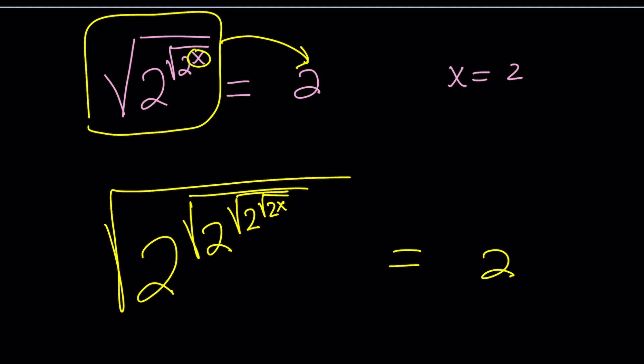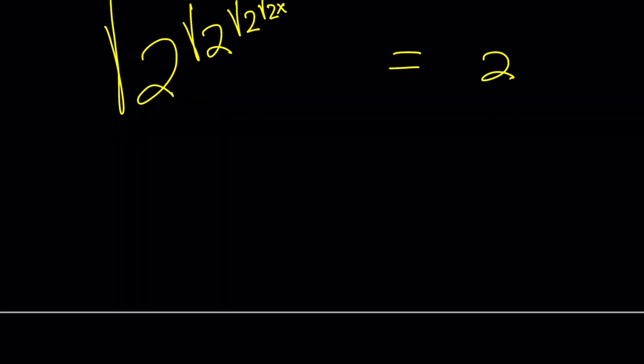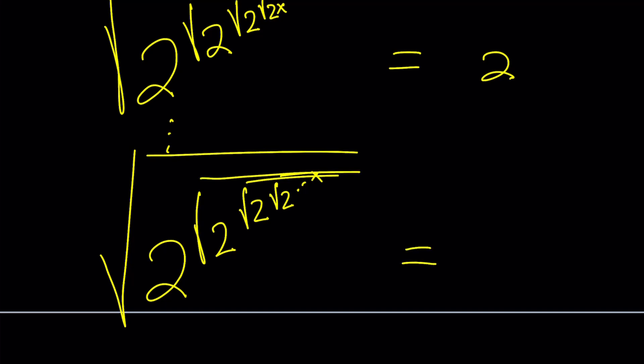So if you keep doing this, you're going to end up with something like this. You're going to get square root of 2 to the power, square root of 2 to the power, square root of 2 to the power, square root of 2 dot dot dot. And you're going to have an x at some point, right? And you're going to close all the radicals. And this is still going to equal 2. So if this goes on forever, you're going to have like an infinite expression or if you want to call it an infinite series or sequence, however you want to express it, it should converge to 2.